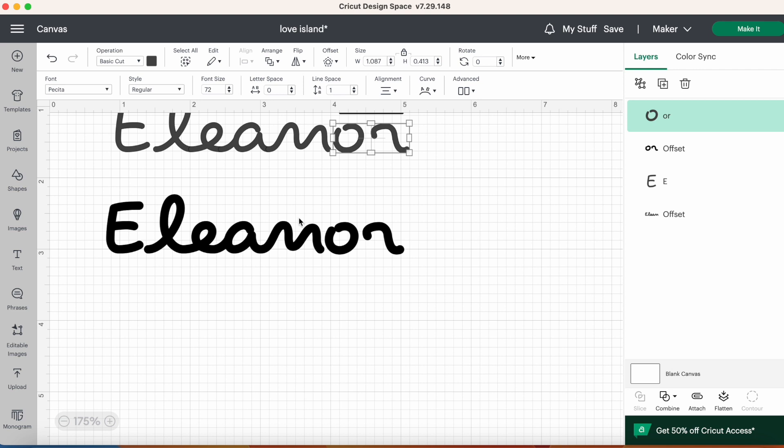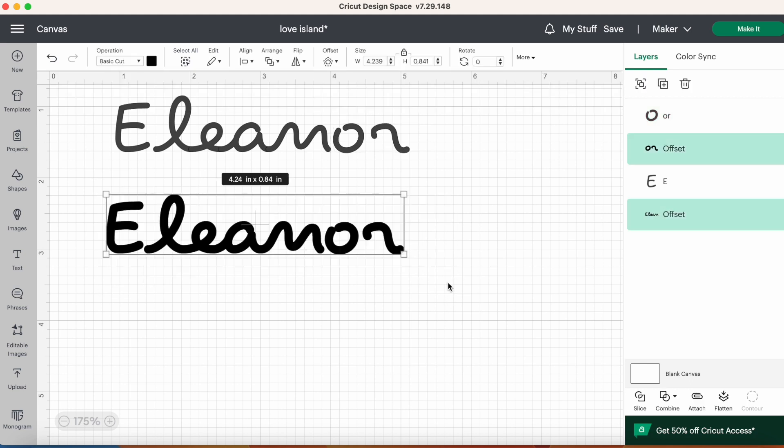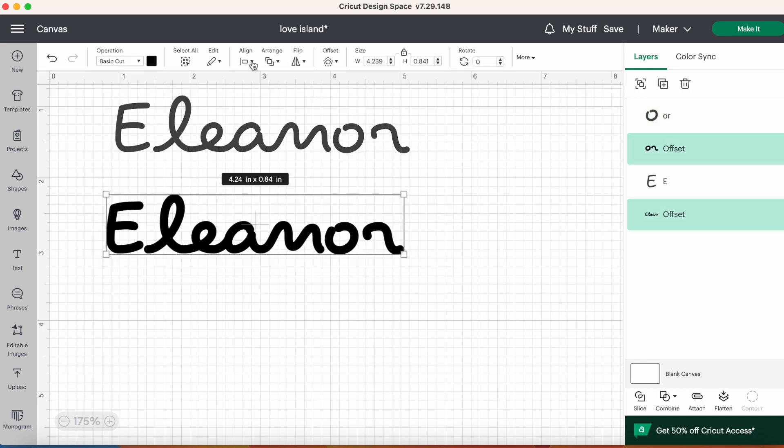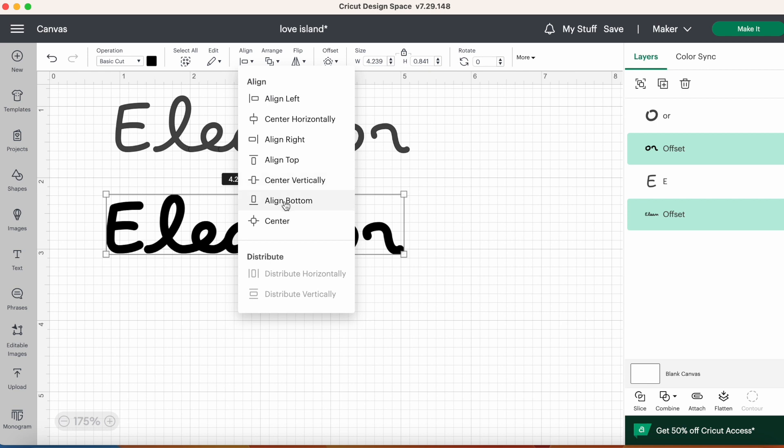So here is the result of my offset and the next thing I'm going to do is select everything and align it again, align it to the bottom so that everything is nice and straight. Next I'm going to change the size of my font, so I need to take off the aspect ratio. I've measured my cup and I'm just going to adjust the size so that it fits nicely on my cup.